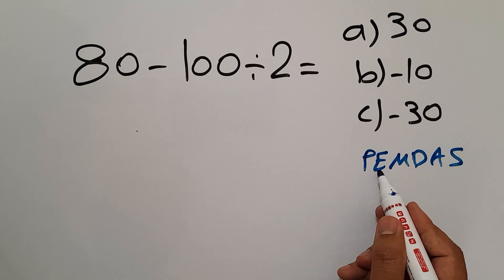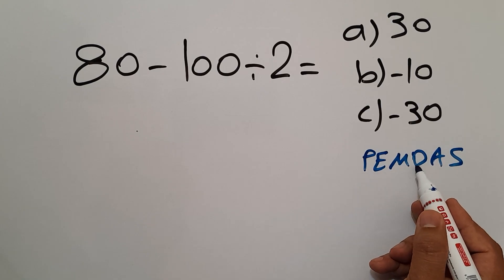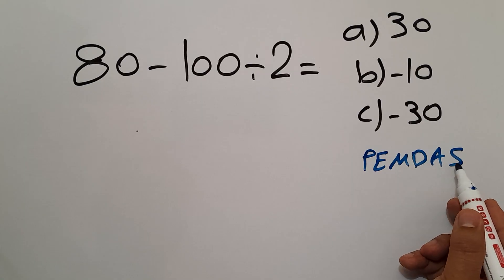We first do parentheses, then exponents, then multiplication or division, and finally addition or subtraction.